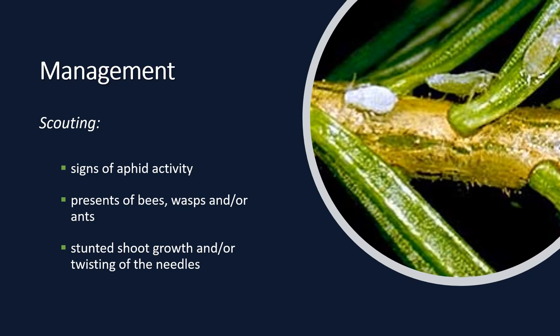So what can you do to manage this pest? Scouting would be a good idea if you suspect aphids. If the trees are showing signs of aphid activity, you will notice a high presence of bees, wasps, and/or ants, as they feed on the sugary secretion called honeydew. You may also see stunted shoot growth, twisting or yellowing of the needles. To confirm that you have aphids, try this tap test: take something white and firm, such as a white piece of paper clipped to a clipboard, and place it in the lower third of the canopy.